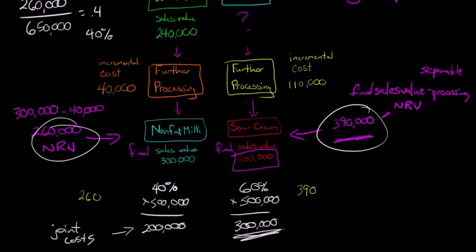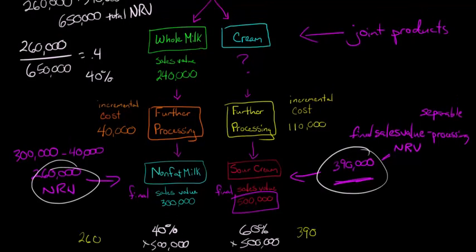And then $300,000 in joint costs allocated for the sour cream. Now, in addition, we have to consider these costs as well, too. They don't have to do with the allocation because they're separable. But just bear that in mind.